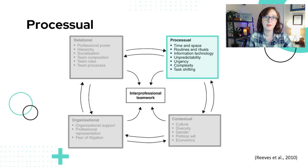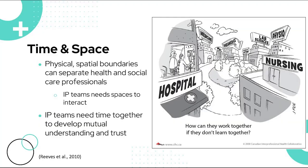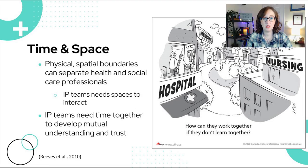Processual includes factors that affect how the team carries out their work across different workplace situations. One of the factors here is time and space, which are both linked to the social organization of work. Starting with space — within healthcare, actual physical spatial boundaries have traditionally separated health and social care professionals from each other. Our reading by Pippa Hall highlighted how where each school is physically located on campus can limit opportunities for interprofessional interactions.